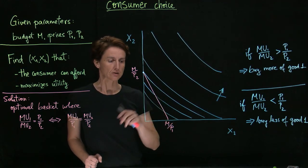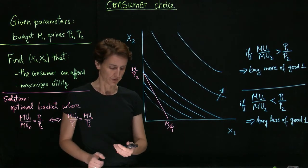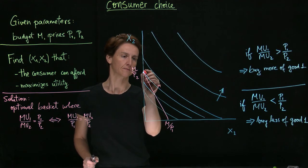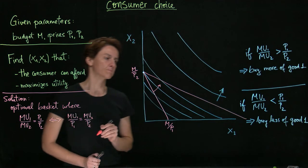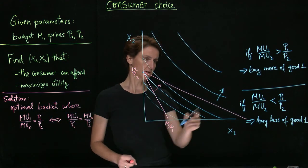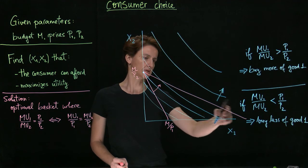If, on the other hand, something changes, for example, if good one gets cheaper, the budget constraint pivots out, it is possible that now we will find a solution where we purchase both, even a solution where we purchase a lot of good one.